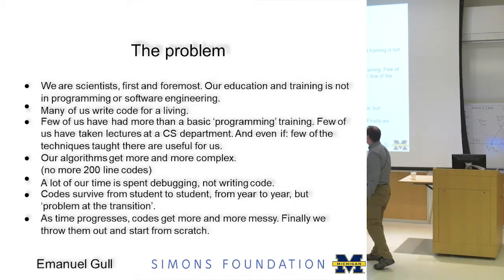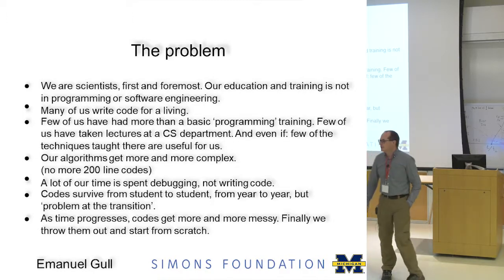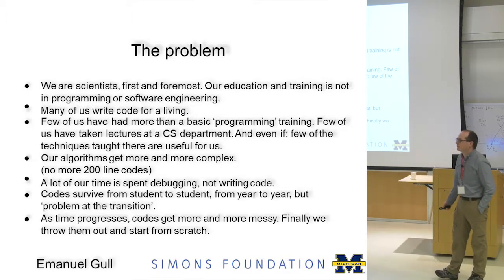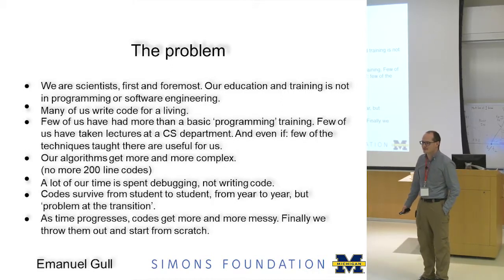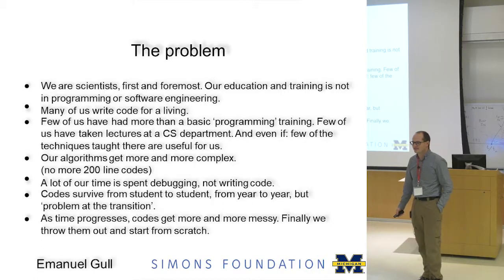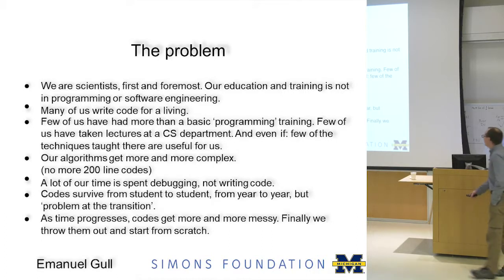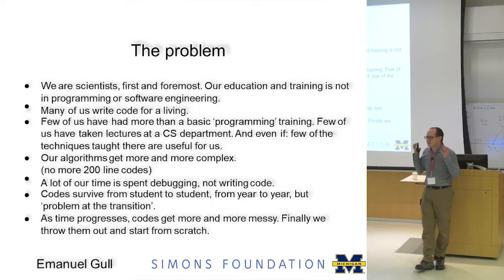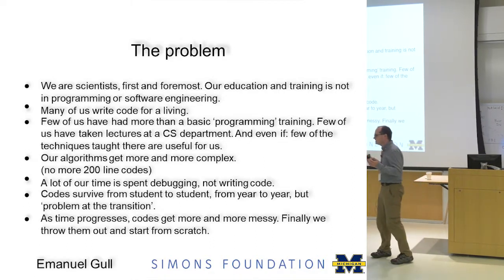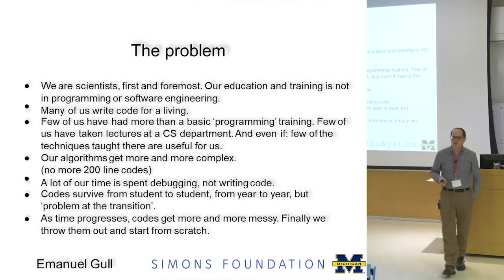At the same time, our algorithms get more and more complex. Back in the day, you could get a PhD with 200 lines of code — those things are rarer and rarer. Who here is working with a density functional code? Any idea how many lines? Do you have any idea what it's doing? A lot of the time we spend is spent debugging — thinking about semicolons or all the stuff that comes with it. Who here spends more time debugging than writing code?